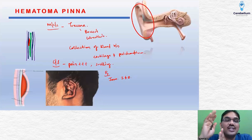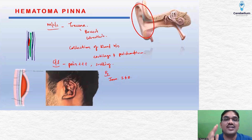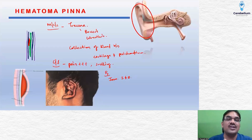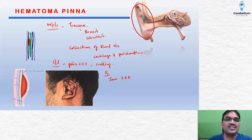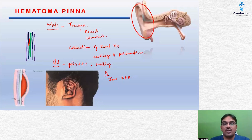Try to understand the nomenclature: otitis externa means external ear infection. Otomycosis is a form of otitis externa, and malignant otitis externa is also a form of otitis externa — these are subtypes under otitis externa.